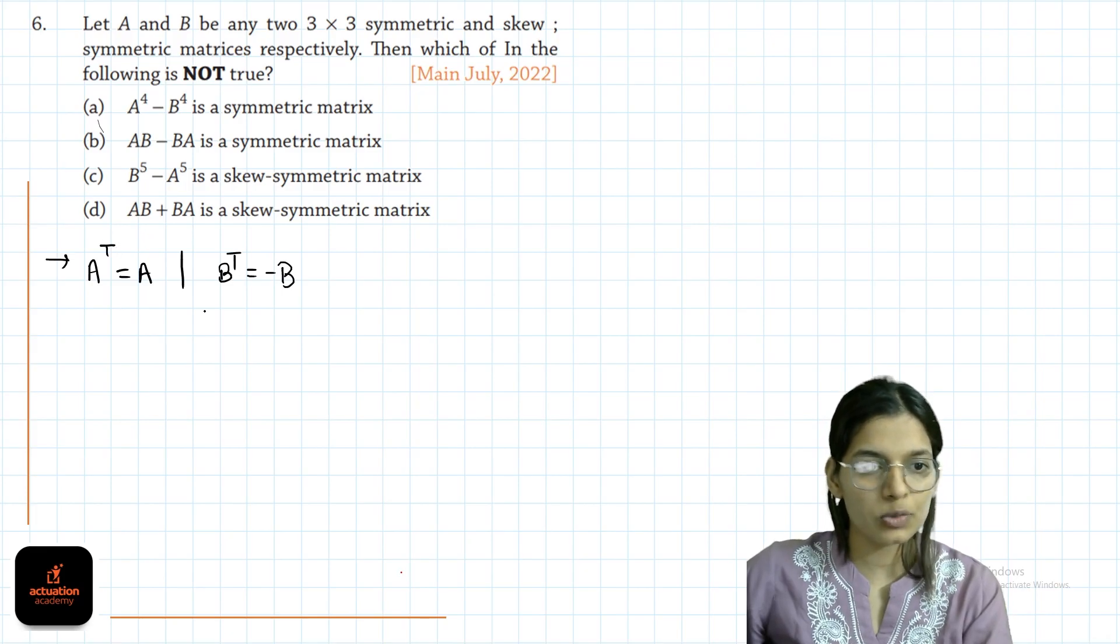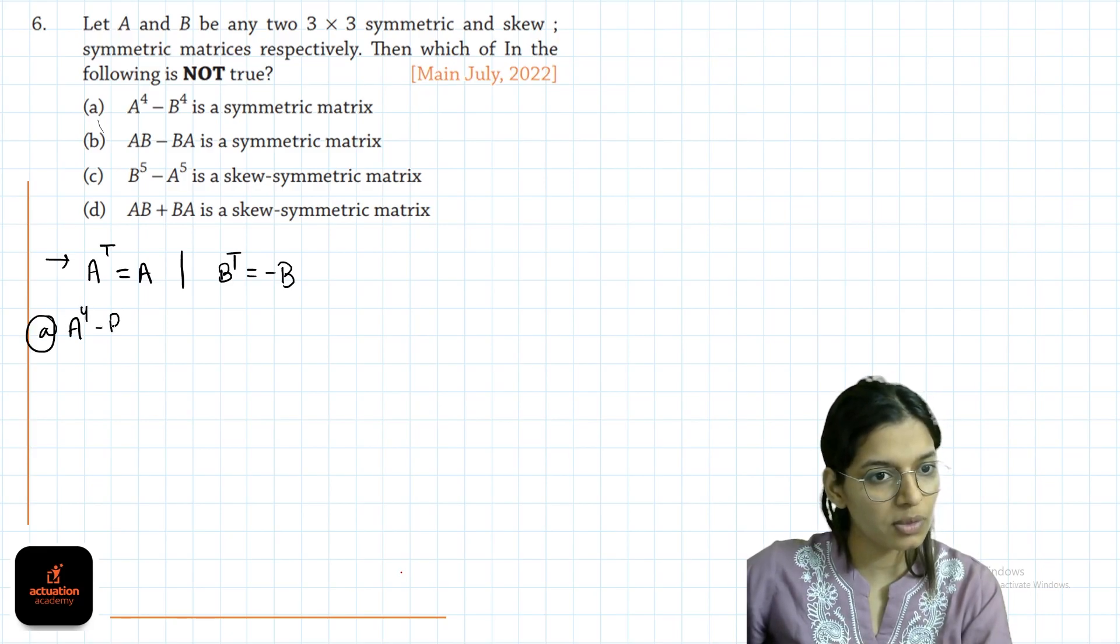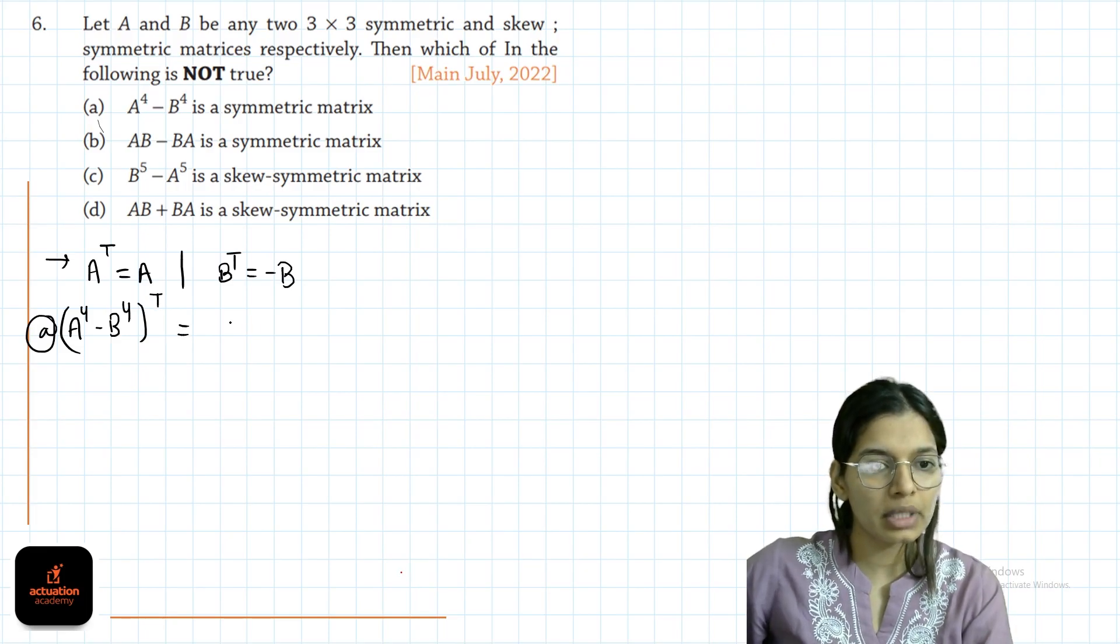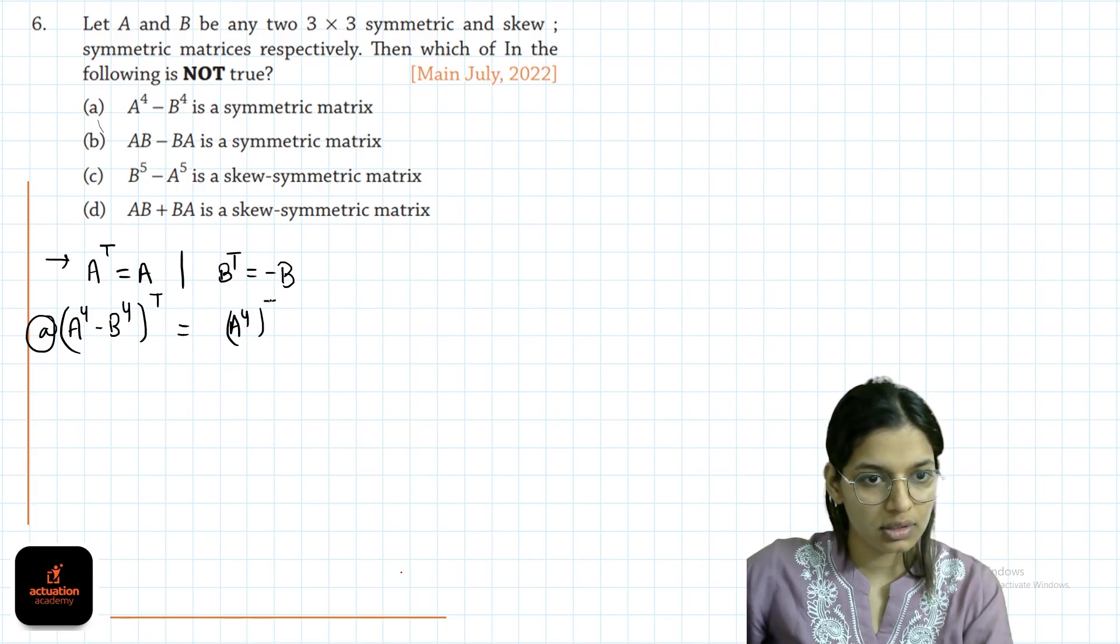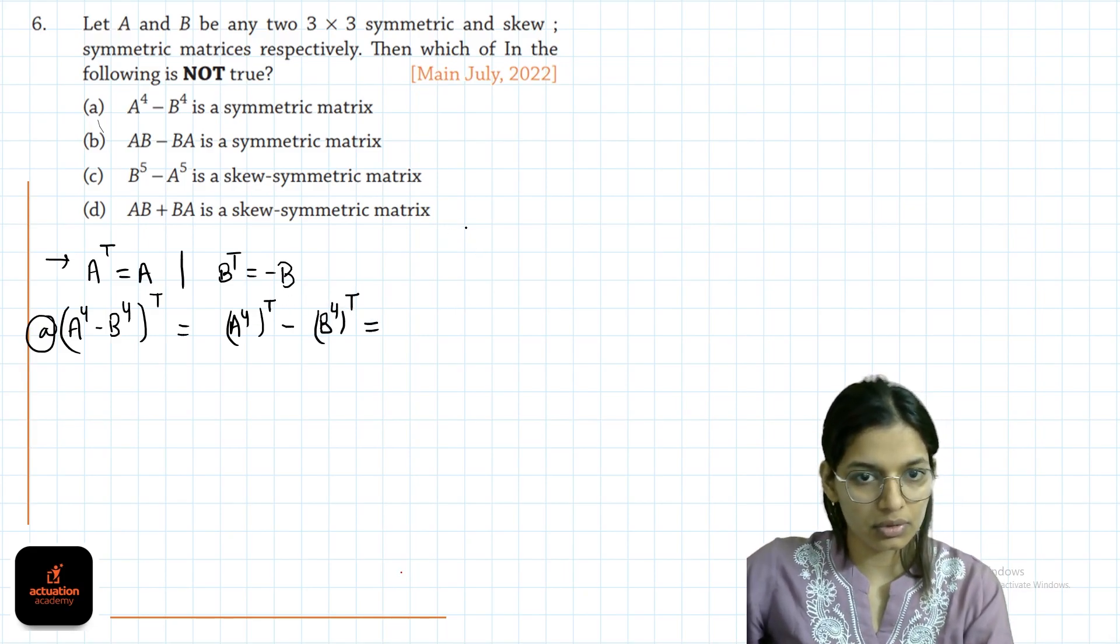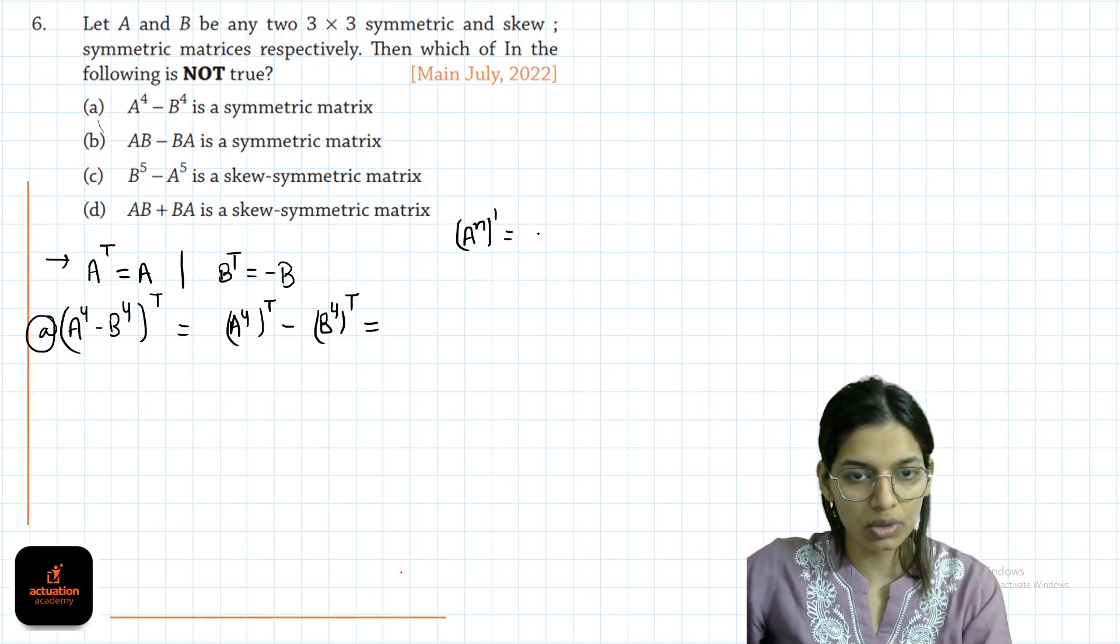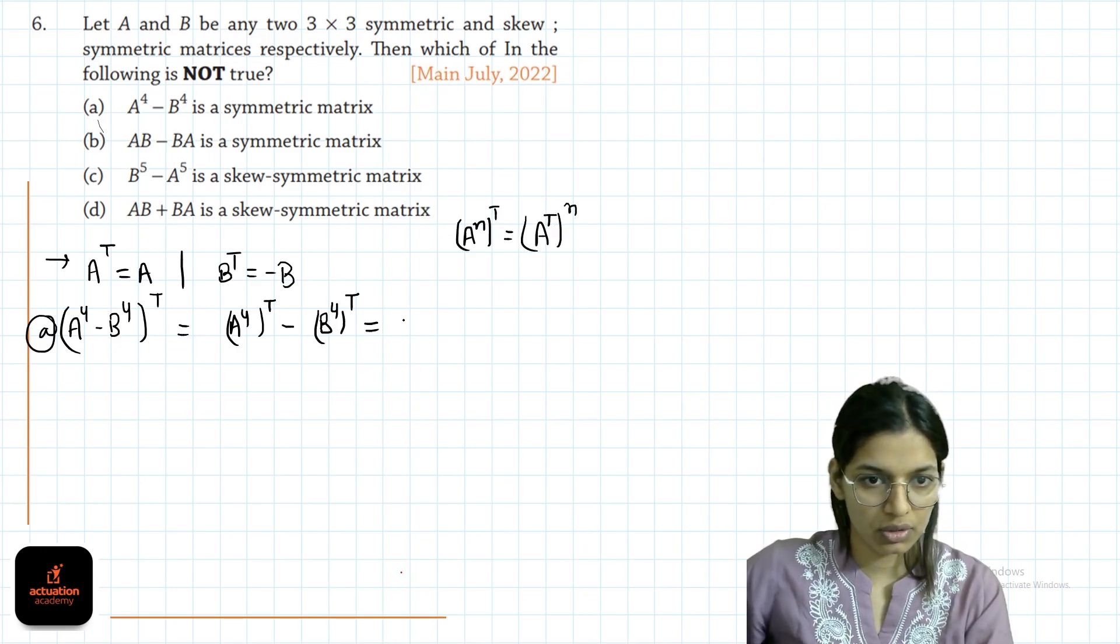The matrix transpose will be the same. We check for option A: A power 4 minus B power 4. We transpose it, it will be A power 4 minus B power 4 transpose. We know that the property A power n transpose is equal to A transpose power n.